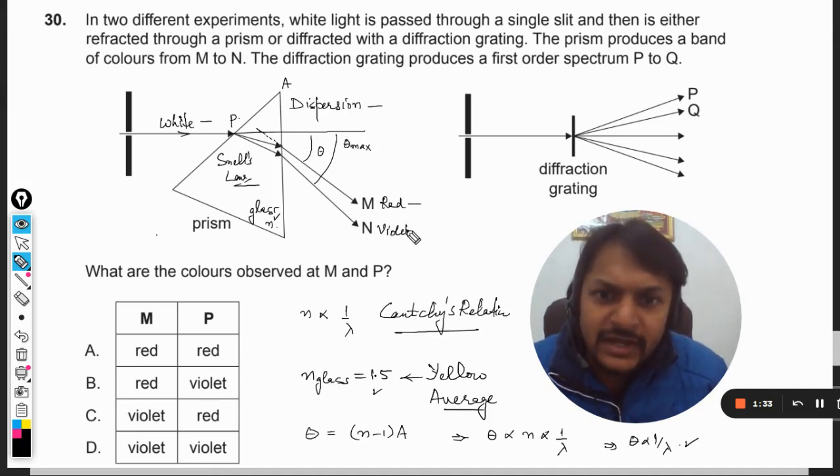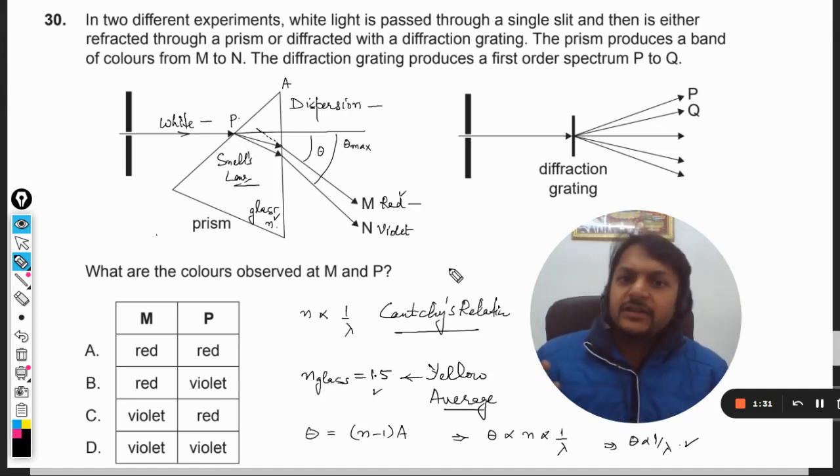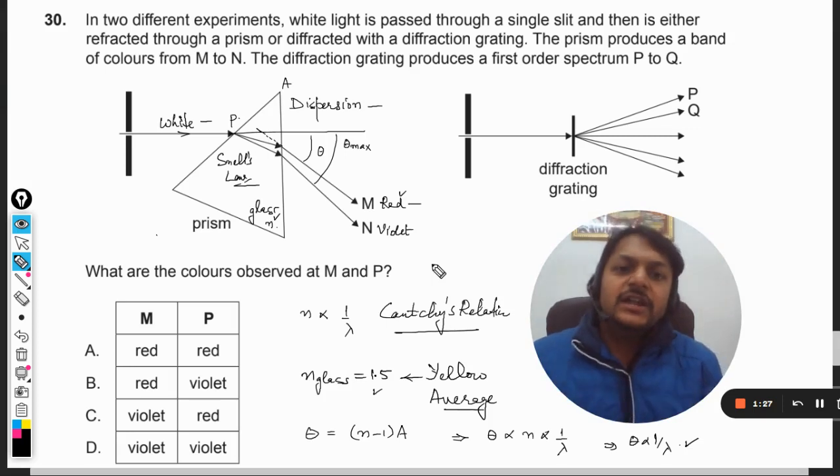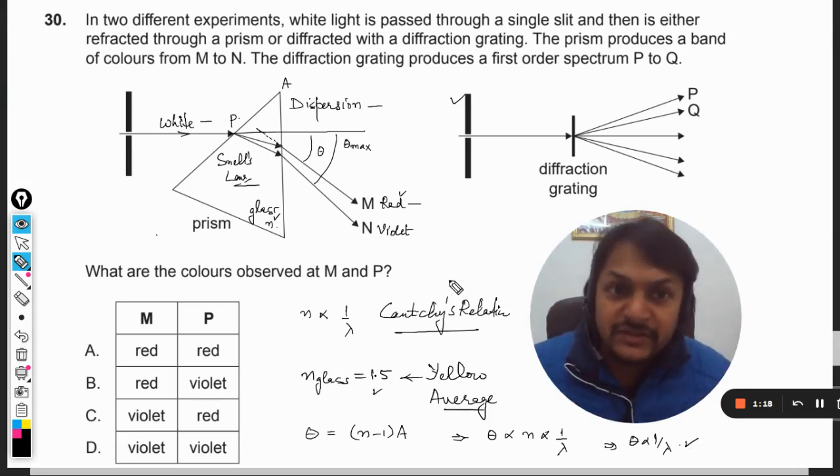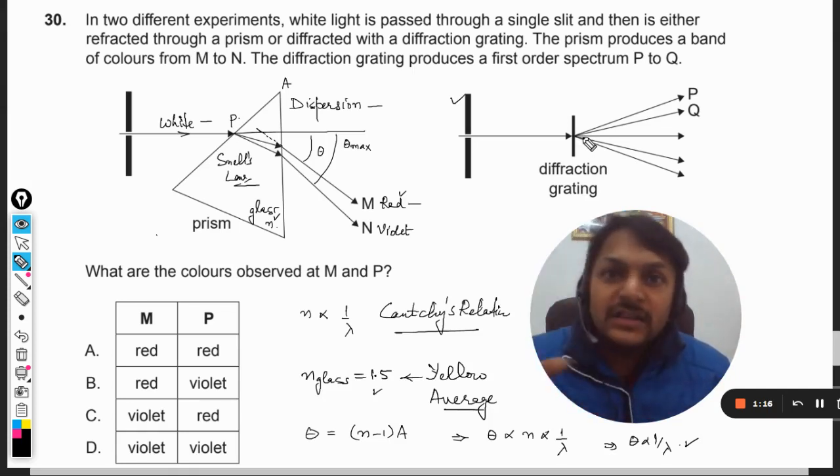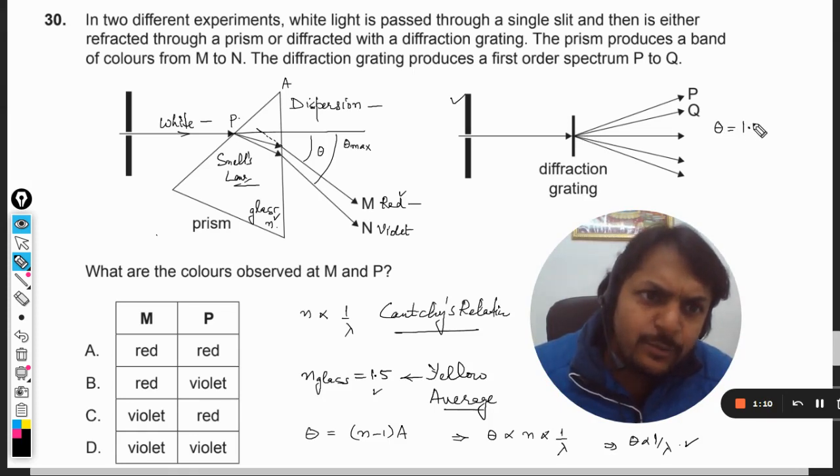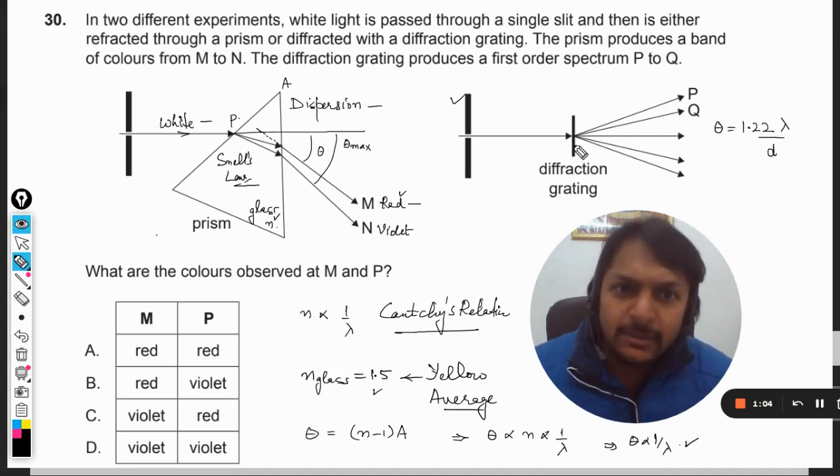So that is dispersion for us, dear students. Now let us move to diffraction. This is a really complex phenomenon that is taking place here. There are so many formulas in interference or diffraction. You might have seen this formula in diffraction: 1.22 into lambda divided by d, where d is the diameter.